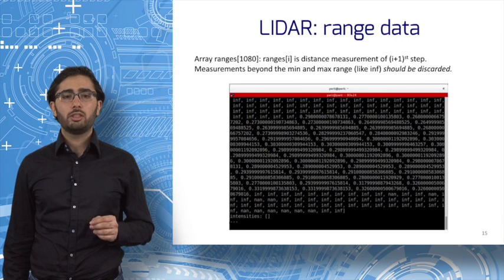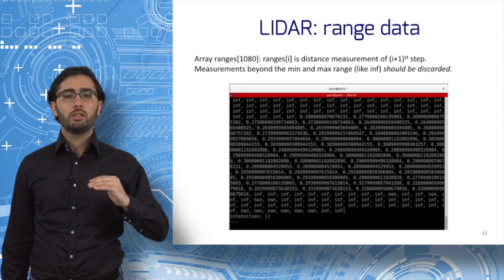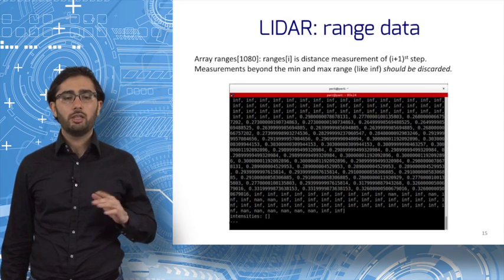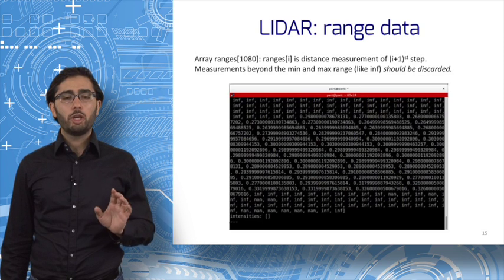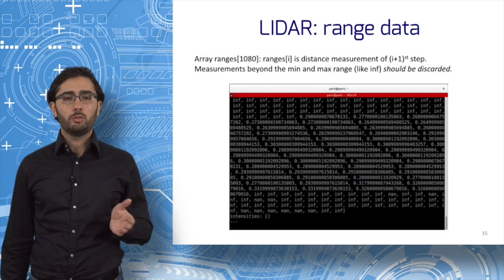If you listen to the LIDAR ROS topic, you will see arrays being printed. Each array comes from one LIDAR scan, i.e. one time instant. Measurements outside the min-max range should be discarded. They are not reliable measurements.